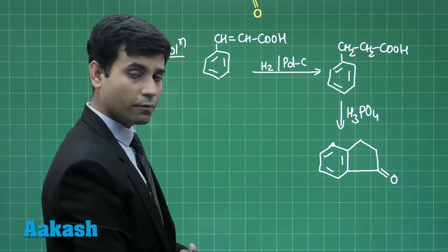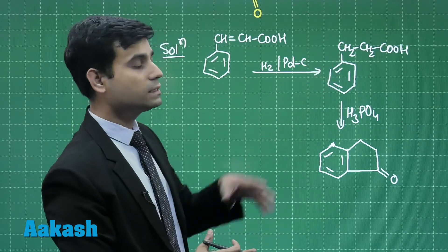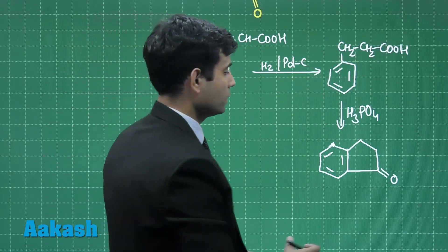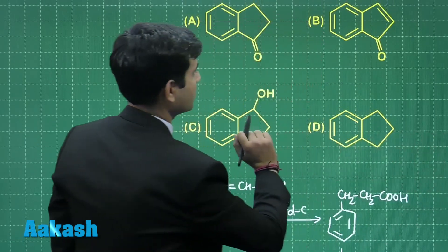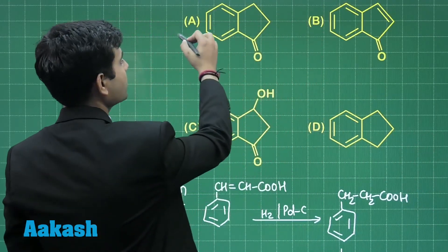A five-membered ring will be formed here from these three carbons. Let us check through the options. The correct answer is option A.